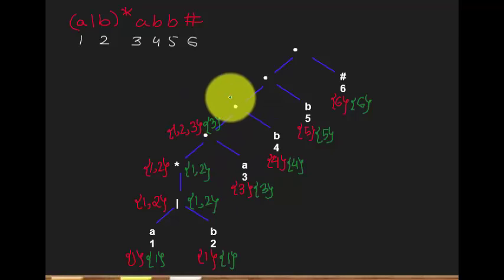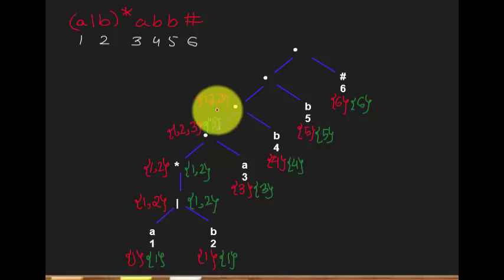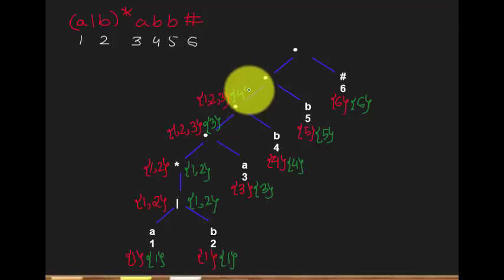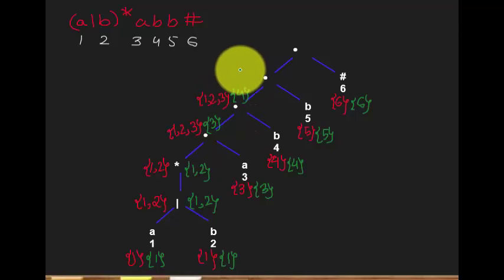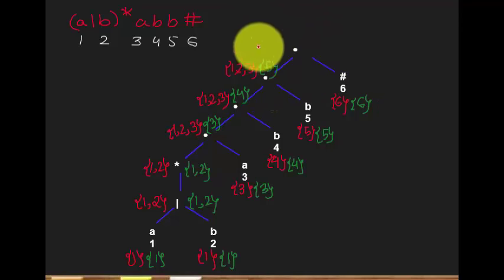Continuing up the tree: for the next cat node, neither child is nullable, so firstpos is the firstpos of the left child — {1, 2, 3} — and lastpos is the lastpos of the right child — {4}. Similarly, the next cat node gives firstpos {1, 2, 3} and lastpos {5}. And for the root cat node, firstpos is {1, 2, 3} and lastpos is {6}.